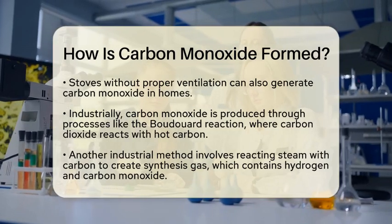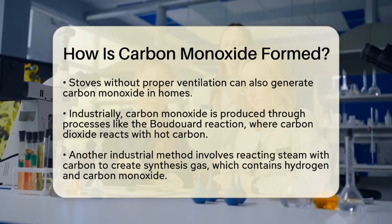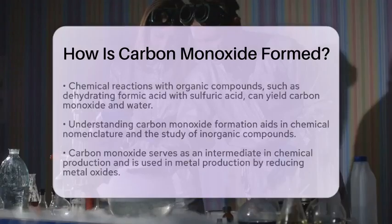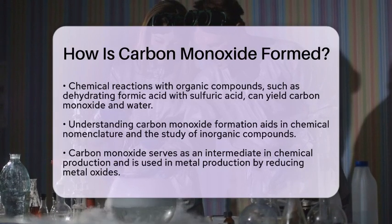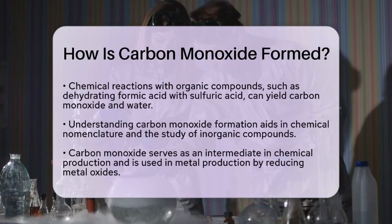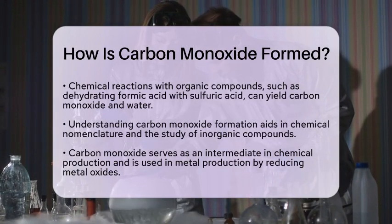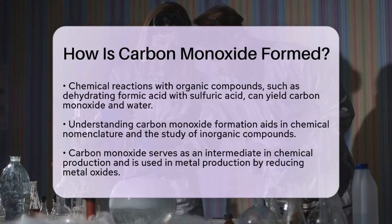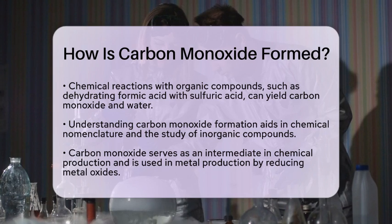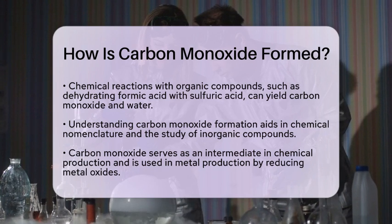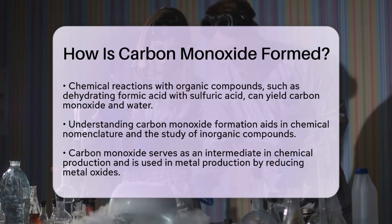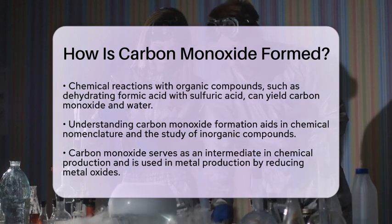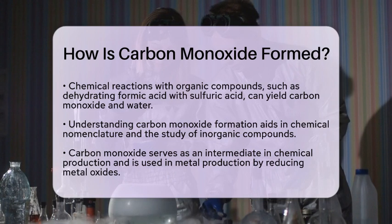For example, when formic acid is dehydrated by sulfuric acid, carbon monoxide and water are produced. Understanding how carbon monoxide is formed is important in the context of chemical nomenclature and inorganic compounds. This knowledge helps students and professionals grasp its role in various chemical reactions and processes.